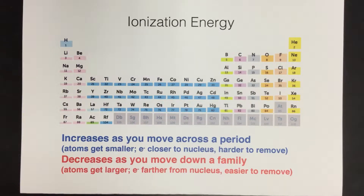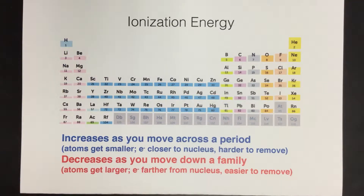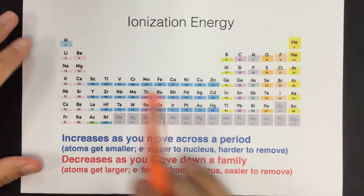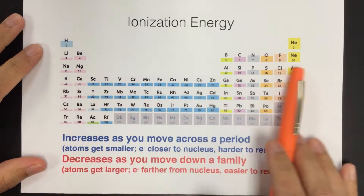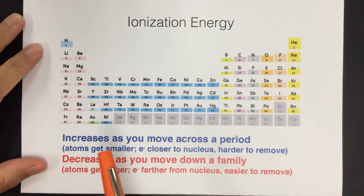In class, I use the analogy of a football player holding on to a football, and we're trying to take the football away, where the football is representative of an electron. So let's take a look at the overall trend here, and this little graphic shows us the trend for ionization energy.